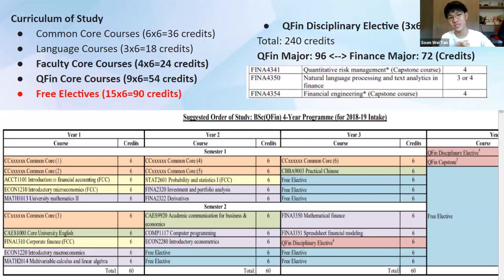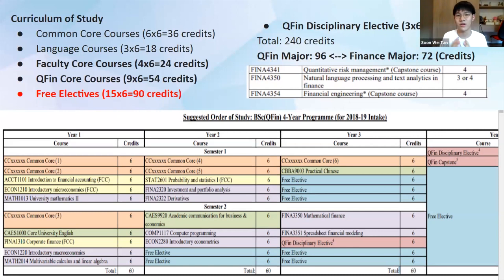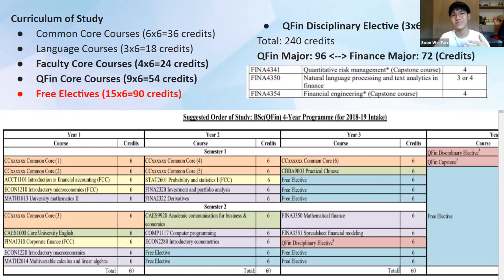I'd like to highlight two things. Firstly, the ones that are bolded — the Quantitative Finance core courses and the Quantitative Finance disciplinary electives, shown in purple and red. From the purple color, you can see there's math, finance, programming, and mathematical finance. In general, Quantitative Finance is basically mathematics plus finance — you're studying finance but adding more mathematical sense to it: how do you actually derive things in finance mathematically.